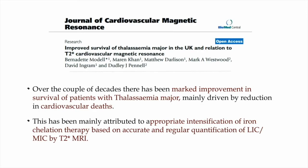One important study to highlight: conducted in the UK over two decades, it showed a very marked improvement in the survival of patients with thalassemia, due to the reduction in cardiovascular deaths. This improvement is mainly attributed to the appropriate intensification of iron chelation therapy based on accurate and regular quantification of iron in the myocardium and liver using the T2 star MRI technique.